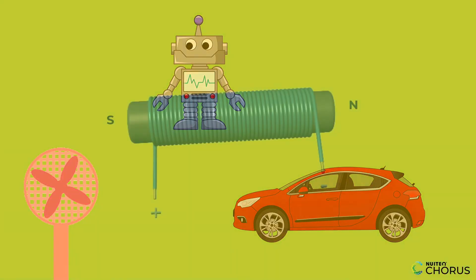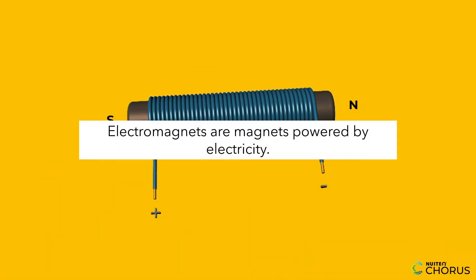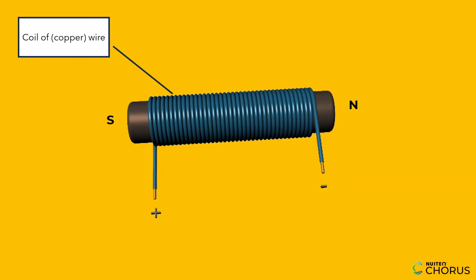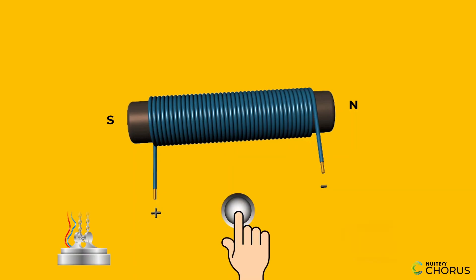Let's recap what you learned. Electromagnets are magnets powered by electricity. They're made of a coil of wire, an iron core, and an electric current. You can find them in junkyard cranes, doorbells, and electric motors.